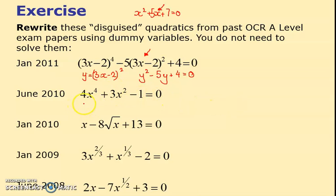This one's simpler: it's just got x squared here. I'm going to pretend y is x squared and my equation becomes 4y squared plus 3y minus 1 equals 0. This one, if I write y as x to the half, which is what this thing is, or root x, my equation is y squared minus 8y plus 13 equals 0.